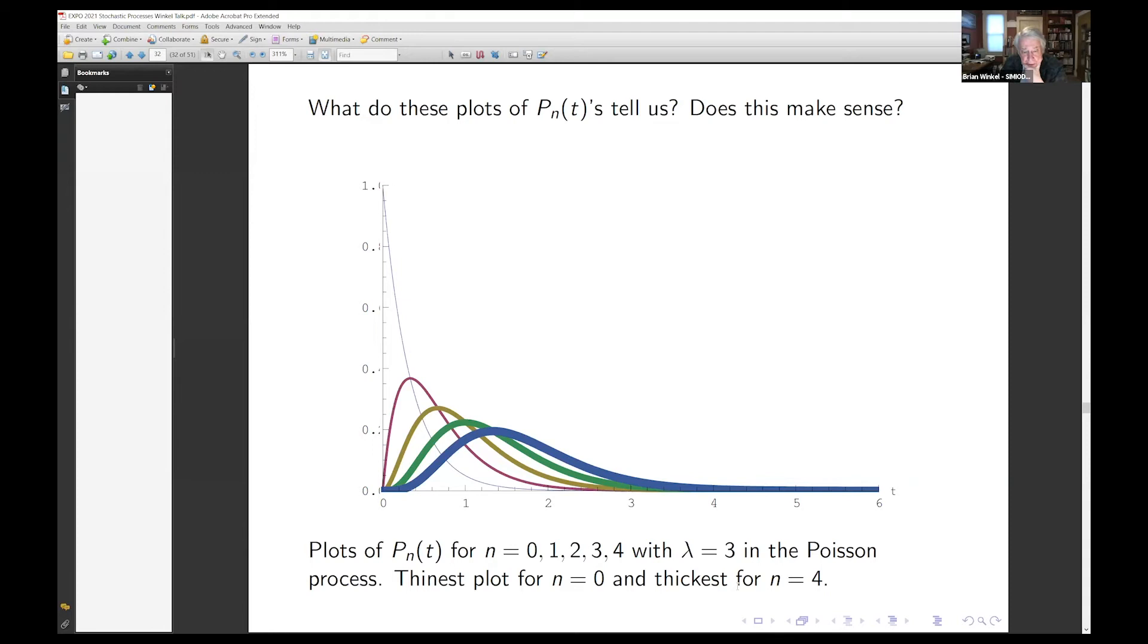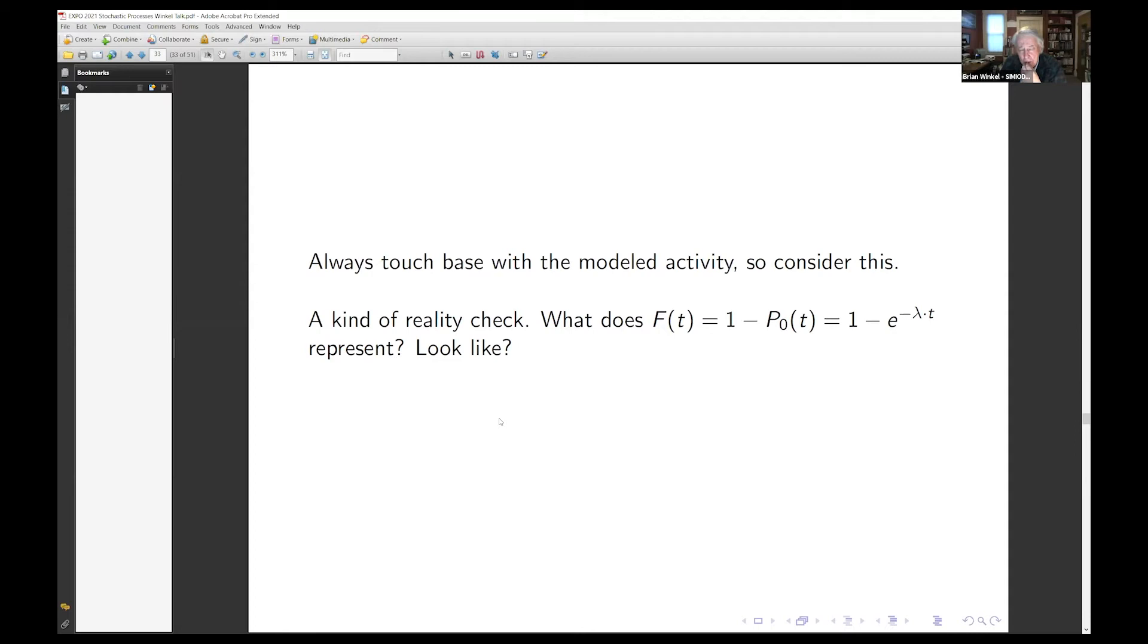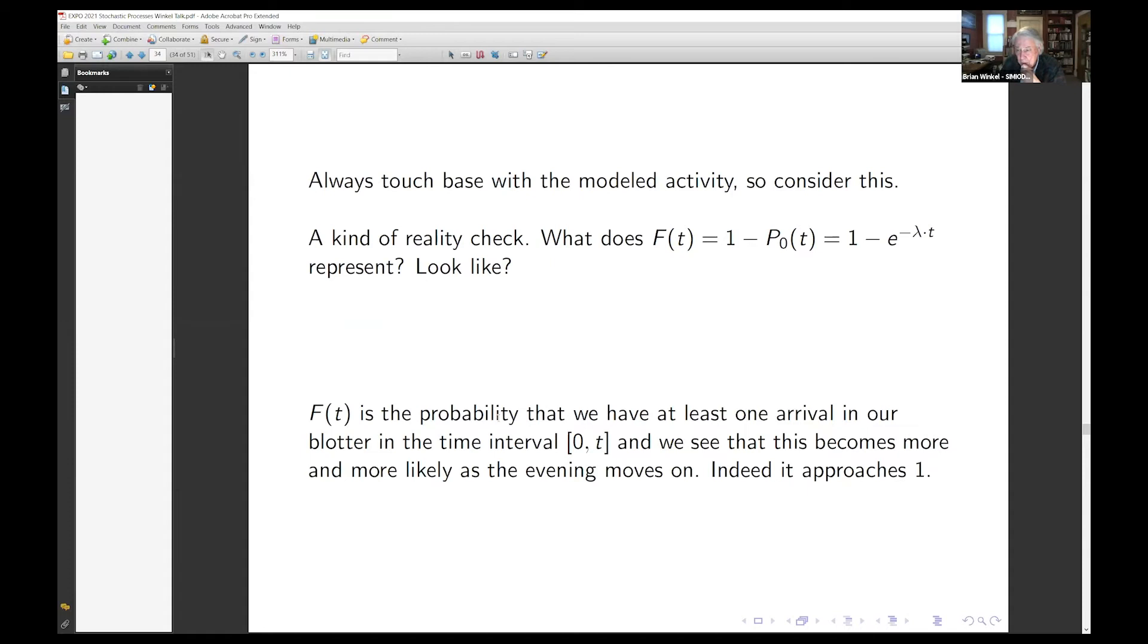Here's some plots by the way with lambda equals three. This is saying we're getting about average about three per hour coming in. This is the plot for P_0. Initially P_0 is one. The probability that there's nobody in the police blotter is one. And as time goes on that probability decreases to eventually the chance of there being no one in the police blotter after five hours is zero. What does one minus the probability that you're in state zero stand for? It's the probability we have at least one arrival in our blotter at that time. And you'll notice that that number goes up to one. Eventually you're going to get somebody do something wrong in town.